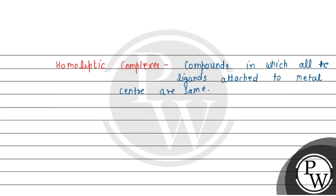For example, K4[Fe(CN)6]. If you have a ligand here, CN, because there is CN, all of them are the same ligands. No other ligands are attached to it.